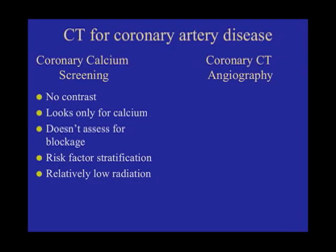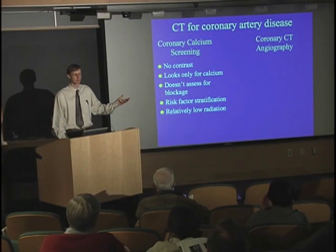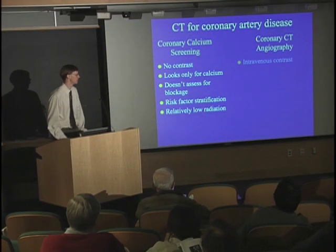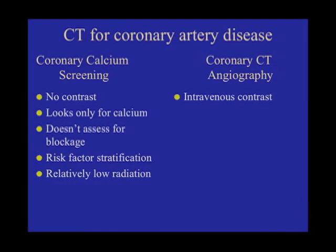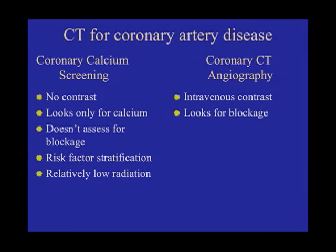It's a pretty low radiation dose, probably one to two millisieverts — about a third of the radiation you get over a year-long period. Now, the coronary CT angiography is different: you inject contrast, and now we're looking at the internal lumen of the vessel. This is the one that looks for blockages, because we can see exactly where things are narrowed since there's contrast actually inside of the vessel.